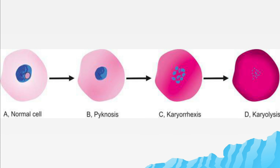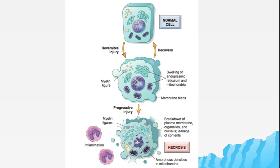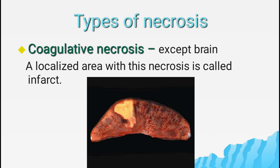These are the cytoplasmic and nuclear changes that occur during necrosis. The etiological agent acts on the normal cell and causes formation of myelin figures, then swelling of the endoplasmic reticulum and detachment of ribosomes from the ER membrane, blebbing and swelling of the mitochondria. Then the plasma membrane breaks down and organelles and nucleus leak out, causing inflammation.